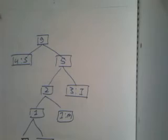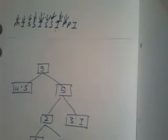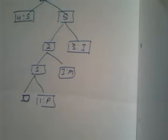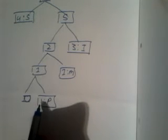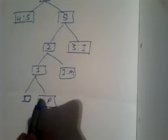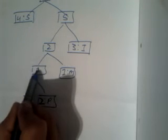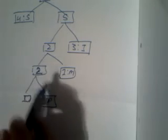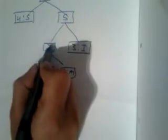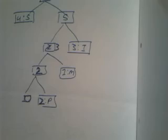Now we insert the next P. We already have P, so we just update the frequency: 1 becomes 2. The empty sibling is 0, so 0 plus 2 is 2. Then 2 plus 1 becomes 3, and 3 plus 3 becomes 6, and 6 plus 4 becomes 10.